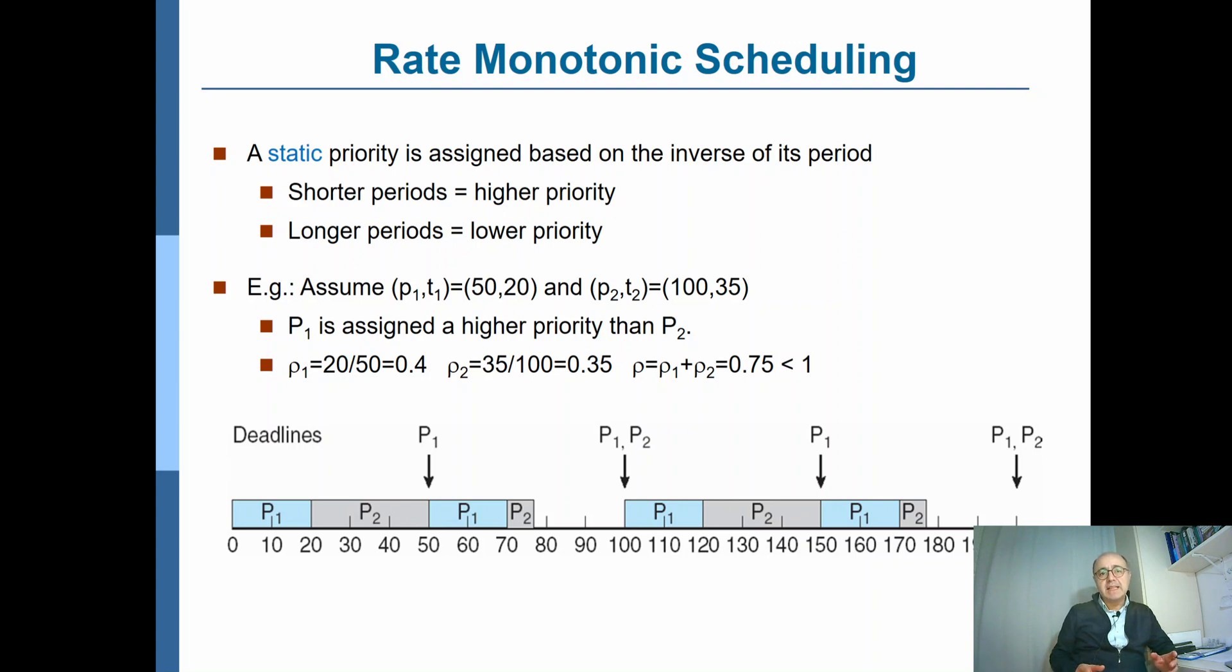Note that this is a static priority because the period of the process is fixed. So if the period of the process is shorter, that means the process is occurring frequently, so I should give the CPU to that process more frequently. Therefore, it should have higher priority.